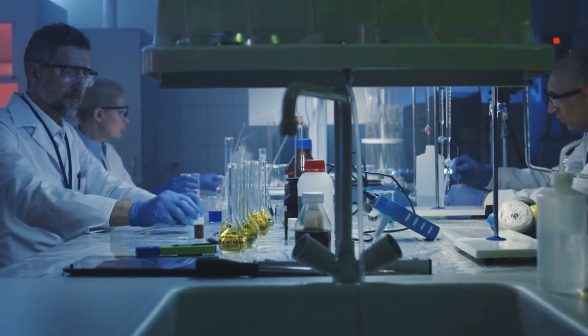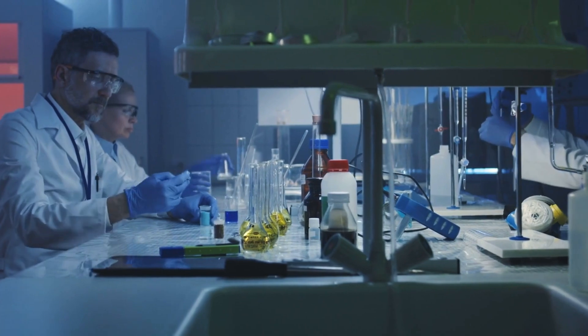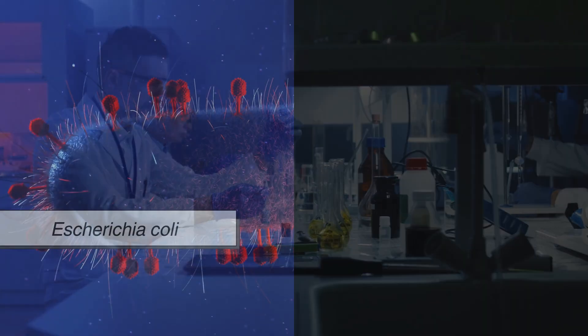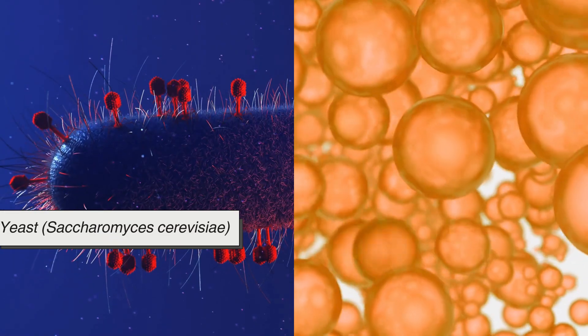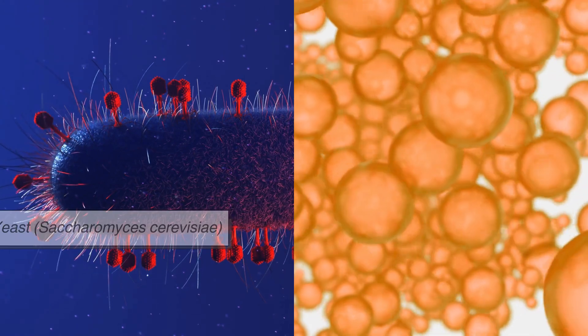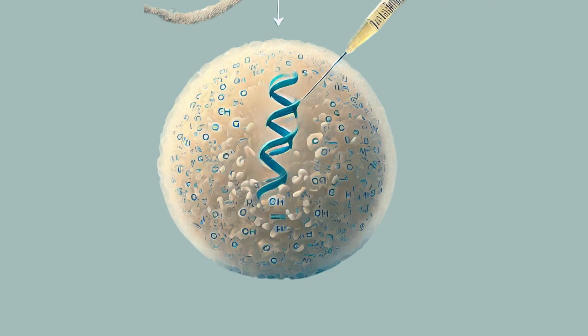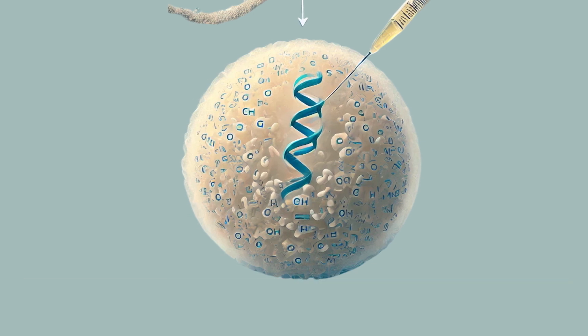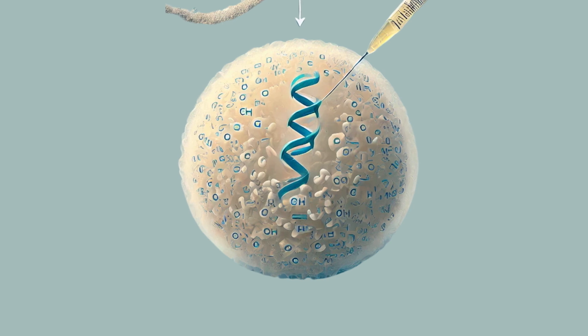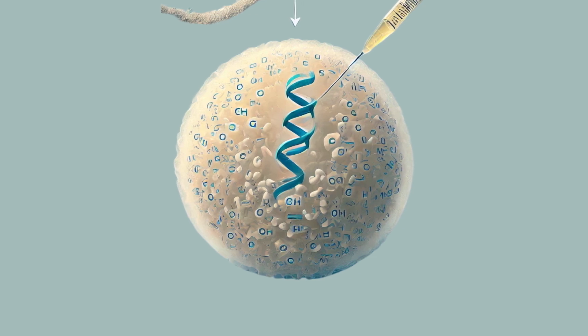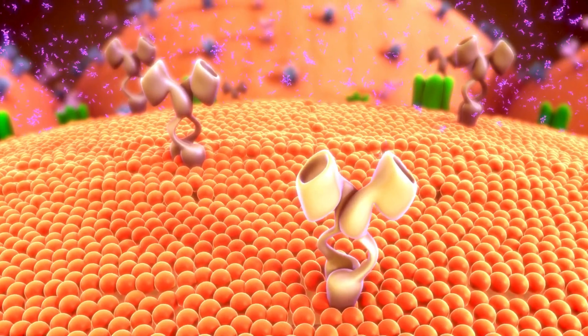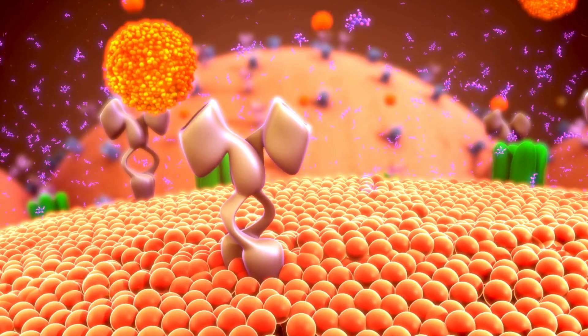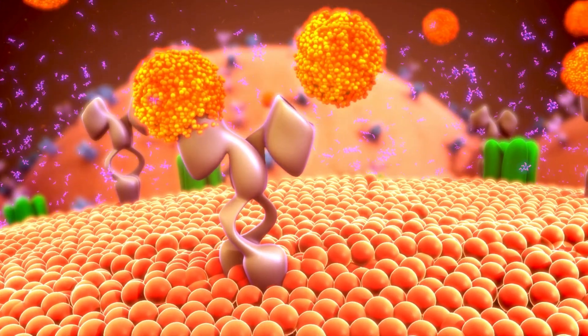Today, the production of insulin begins in laboratories, where scientists use recombinant DNA technology to program bacteria, Escherichia coli, or yeast, Saccharomyces cerevisiae, to produce the hormone. The first step involves modifying their DNA by inserting the human insulin gene, which provides the instructions needed for insulin synthesis. This process, known as transformation, is crucial, as it turns these microorganisms into tiny insulin-producing factories, forming the foundation for large-scale manufacturing.